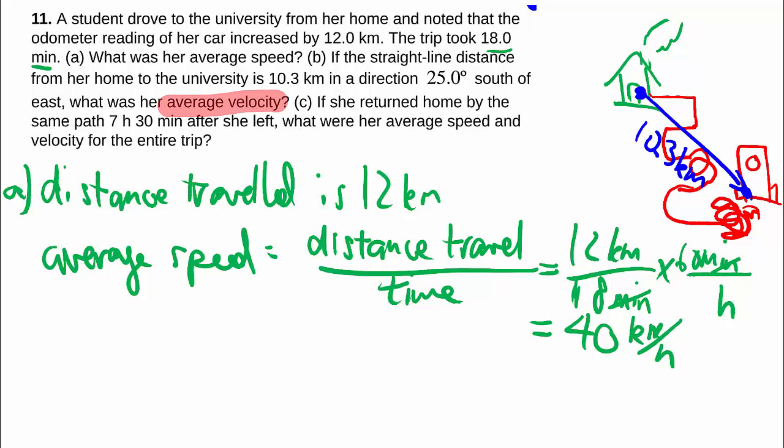in a direction that is 25 degrees south of east. That means direction wise you start looking at the east side and you go south towards the south by 25.0 degrees. So that's the direction which we will preserve for our velocity calculation.